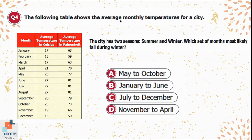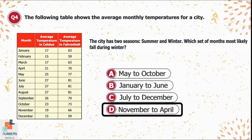Question 4: The following table shows average monthly temperatures for a city with two seasons — summer and winter. Which set of months most likely falls during winter? Options: A) May to October, B) January to June, C) July to December, D) November to April. Temperature is low in winter, so looking at Celsius values: November is 19°C, December 15°C, January 17°C, February 15°C, March 17°C. The suitable range from the options is November to April — option D is correct.